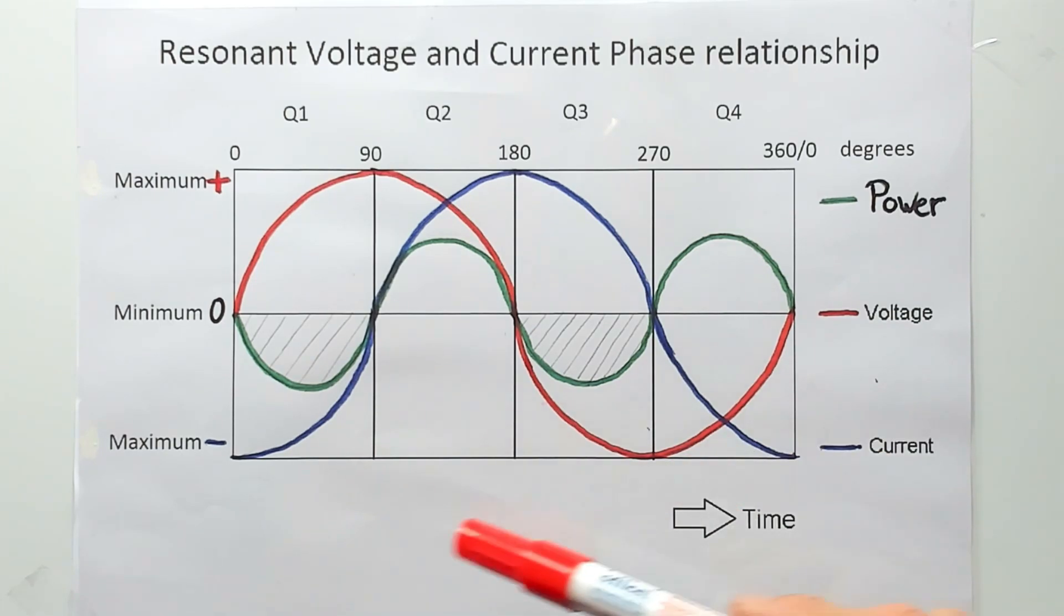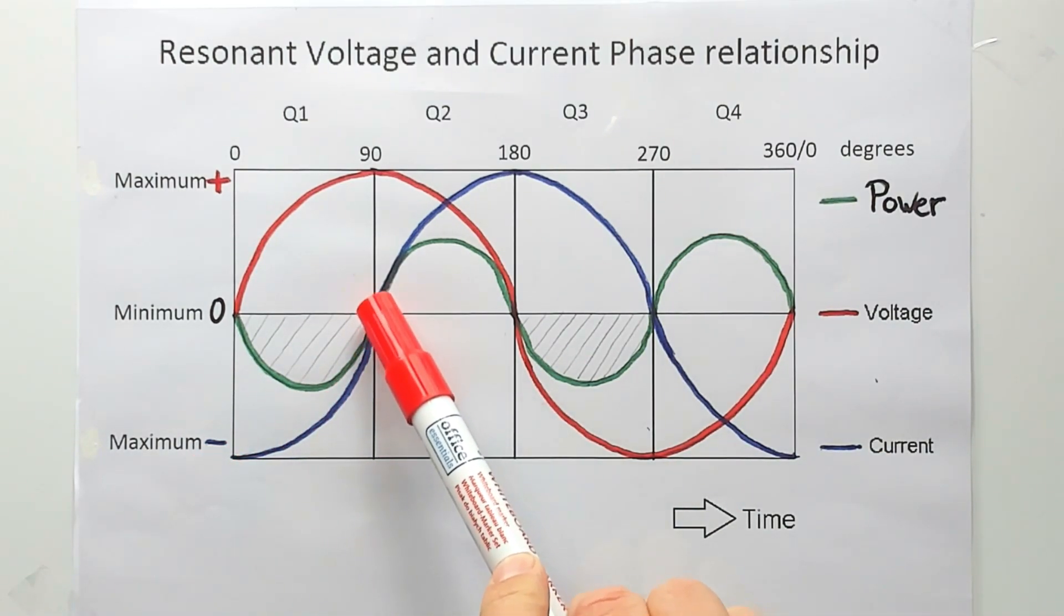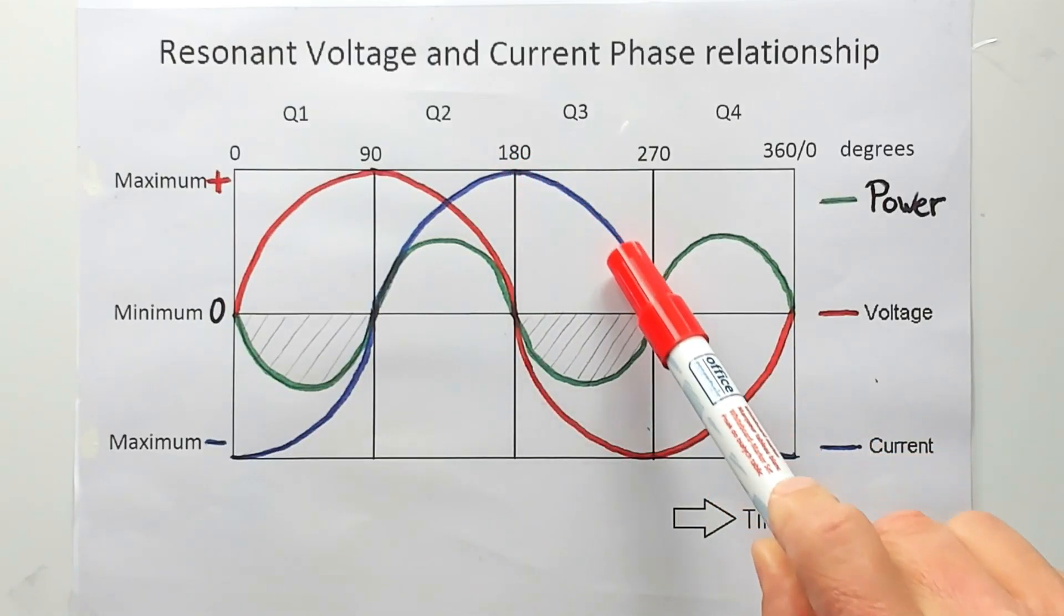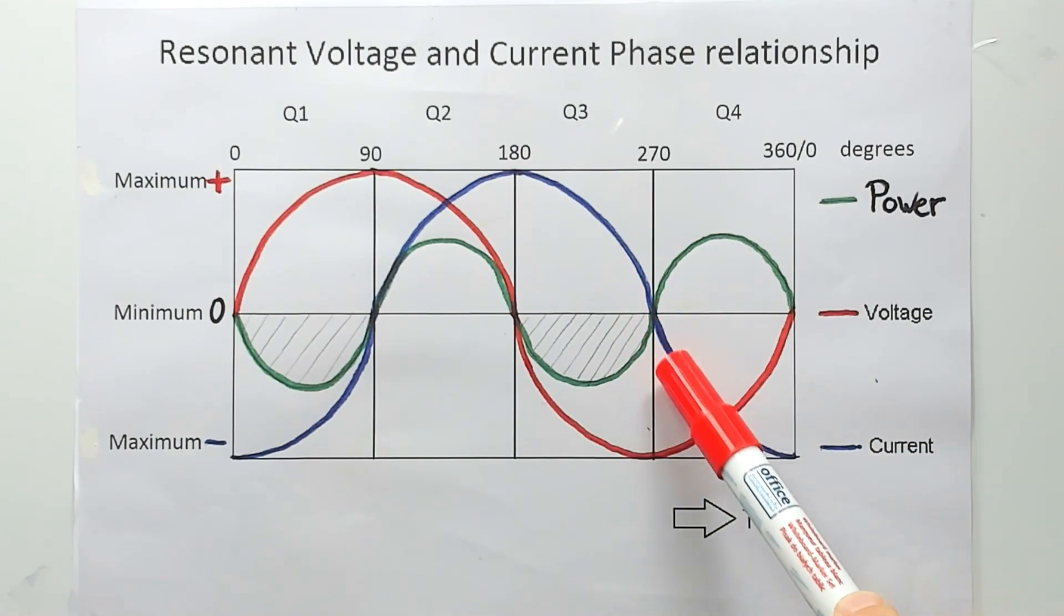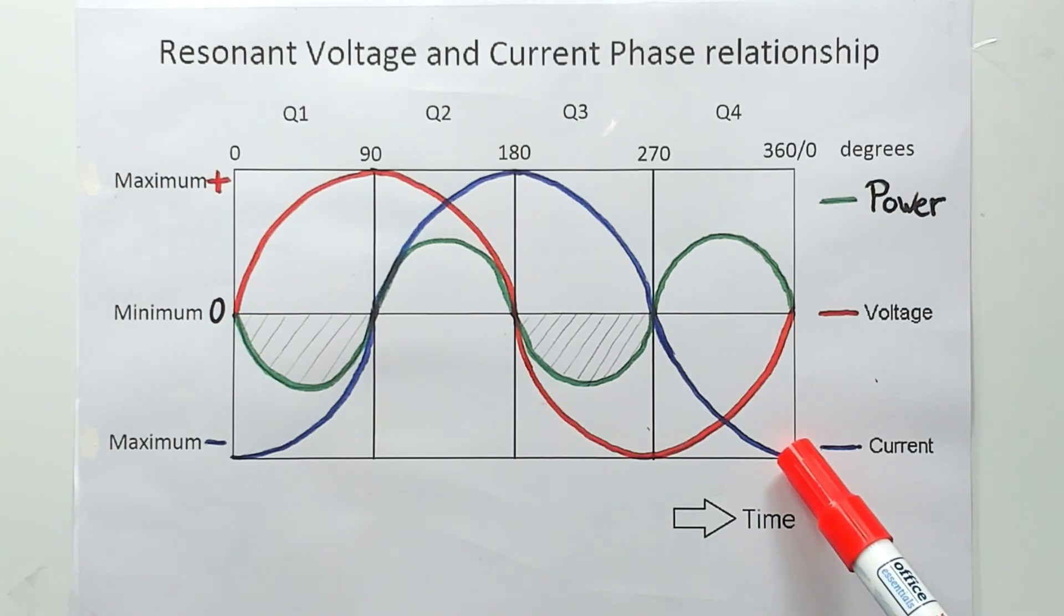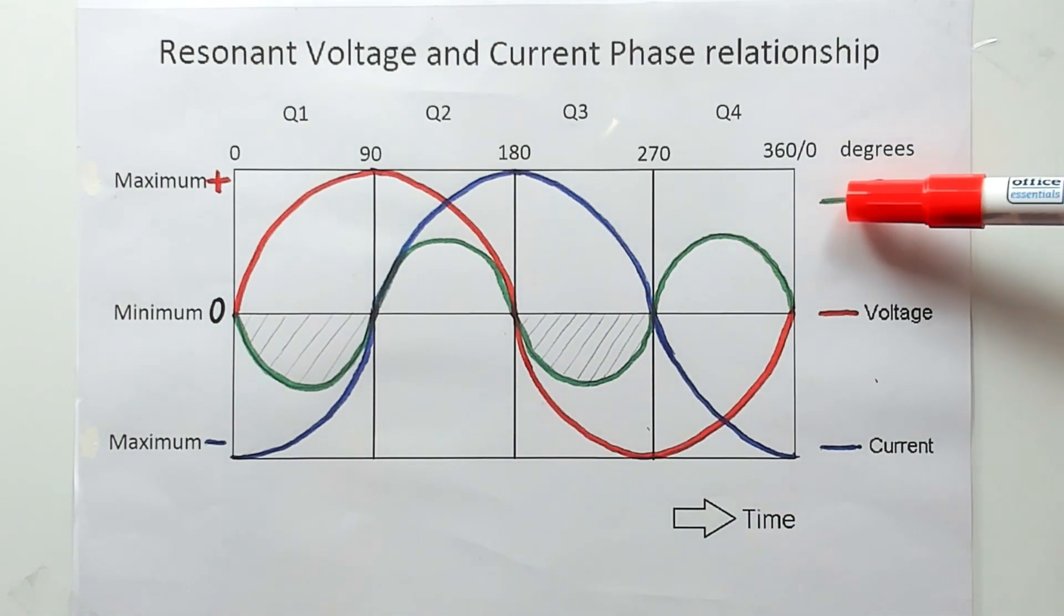And the current in blue from negative maximum to minimum to positive maximum to minimum again and to negative maximum again. Also drawn is in green the power of the resonant cycle.